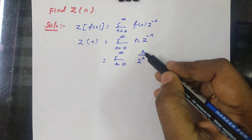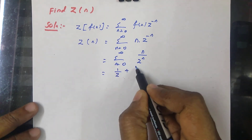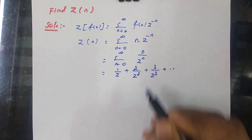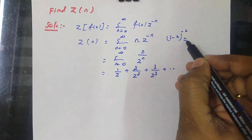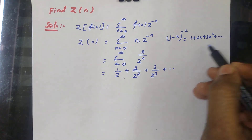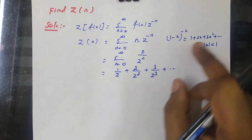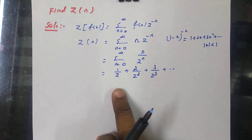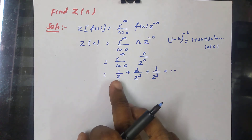Applying values: when n equals 1, we get 1 by Z; when n equals 2, we get 2 by Z squared; when n equals 3, we get 3 by Z cubed; and so on. We use the formula: 1 minus x to the power minus 2 equals 1 plus 2x plus 3x squared plus etc., provided mod x is less than 1. Comparing, the first term here is 1 by Z, not 1, so we take 1 by Z outside as a common factor, giving 1 by Z times the quantity 1 plus 2 by Z plus 3 by Z squared plus etc. Now we can compare with the formula, where x equals 1 by Z, giving the condition modulus of 1 by Z less than 1, which implies mod Z is greater than 1.